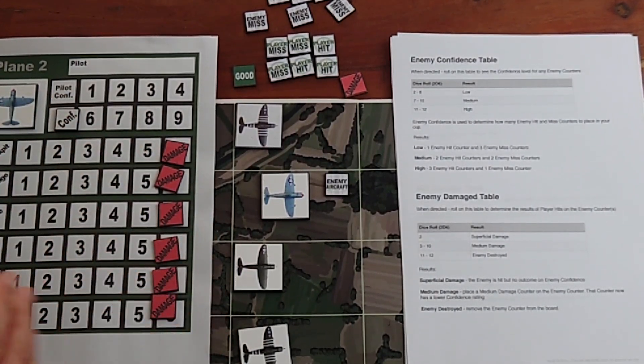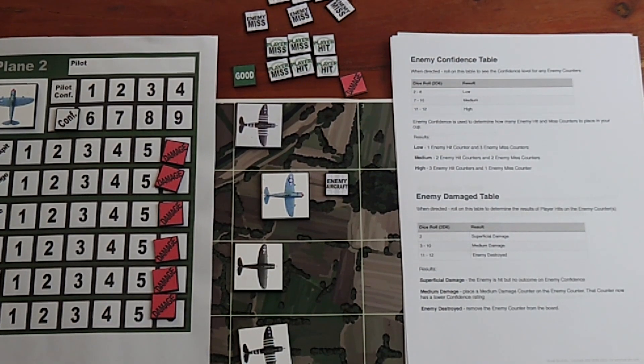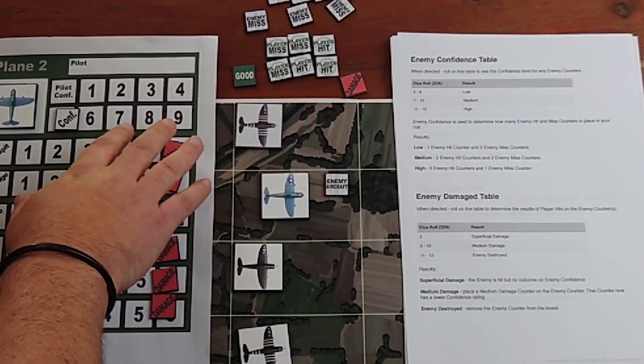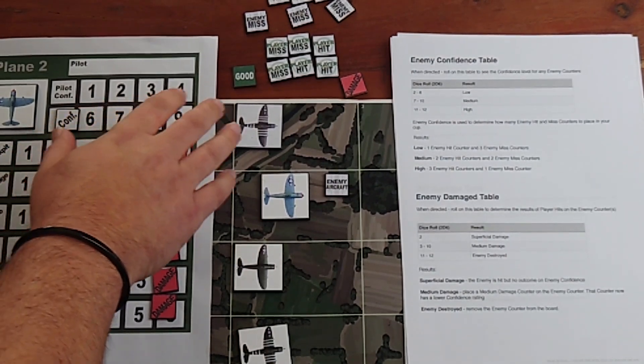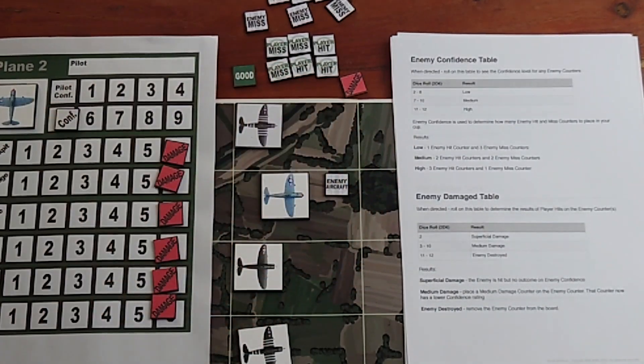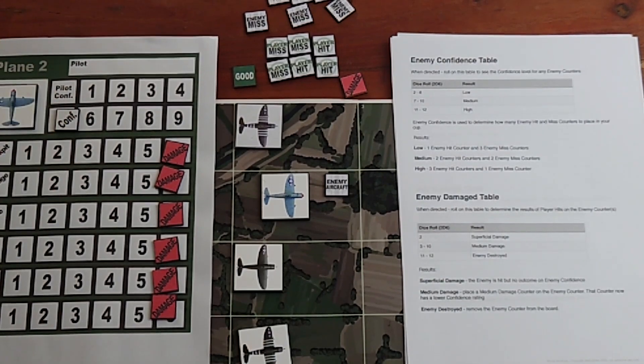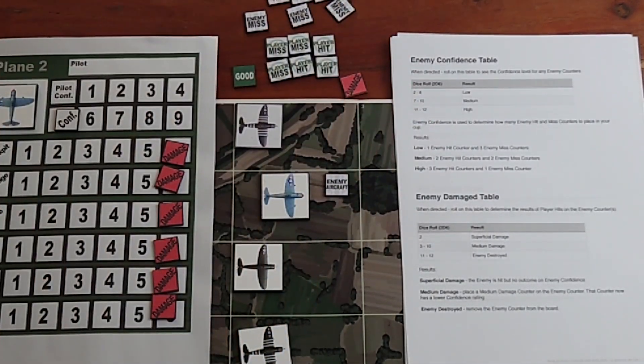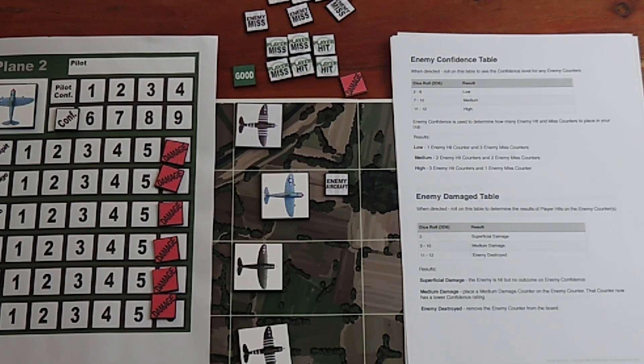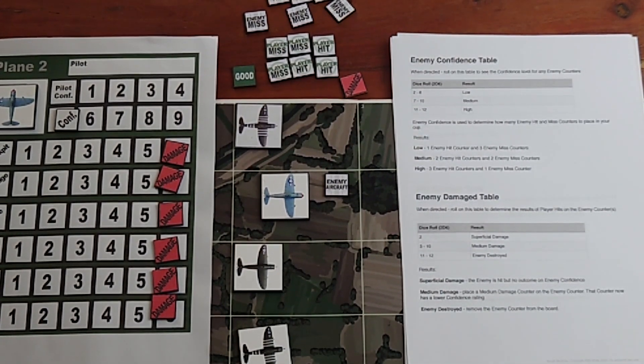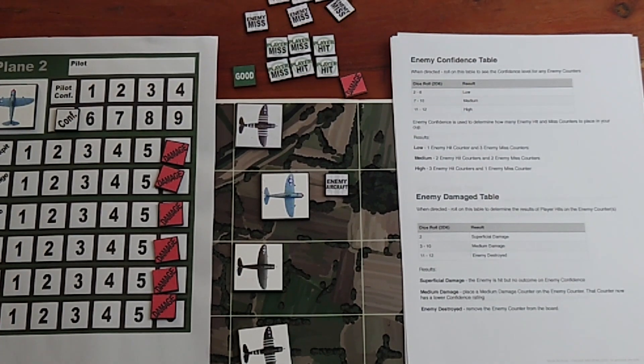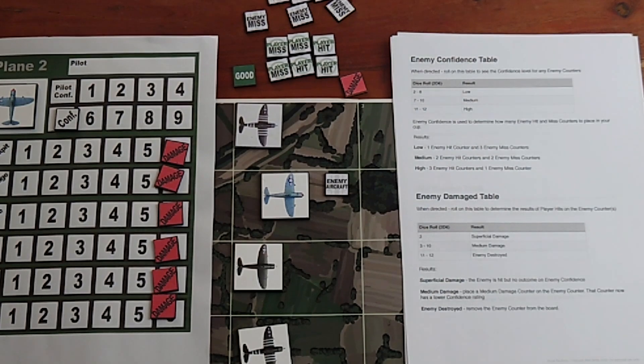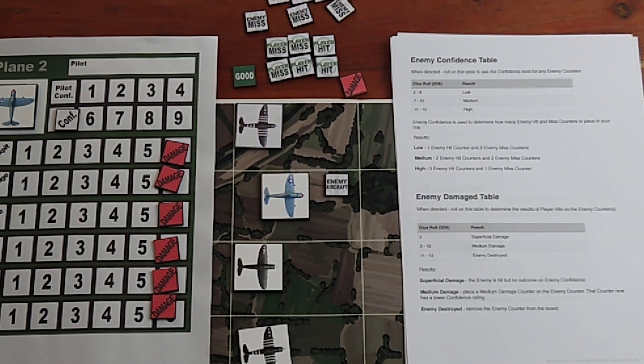The first thing you're going to do is establish the confidence level of the enemy. You need to do this for every enemy that you encounter. You roll on this enemy confidence table with two dice, and for the sake of argument in this video, we're going to say that the enemy confidence is medium on this table here.